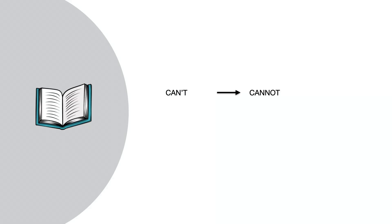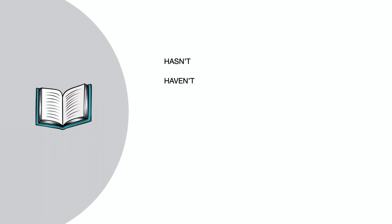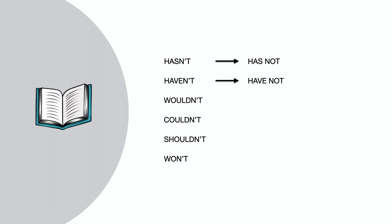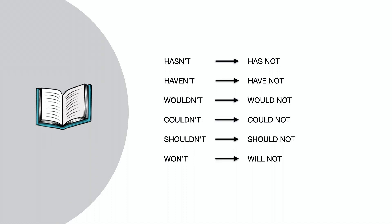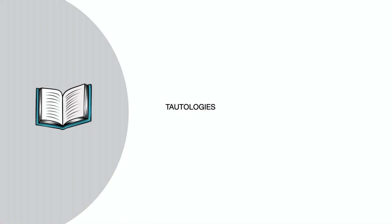Contractions are words like 'don't,' 'can't,' and 'isn't.' These words need to be written out in full. In spoken language we might use their abbreviated form, but in academic writing we need to write them out. So: 'can't' is 'cannot,' 'don't' is 'do not.' Similarly, 'hasn't,' 'haven't,' 'wouldn't,' 'couldn't,' 'shouldn't,' and 'won't' become 'has not,' 'have not,' 'would not,' 'could not,' 'should not,' and 'will not.' All of these contractions need to be written out in full.